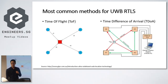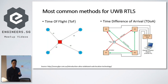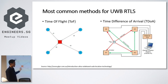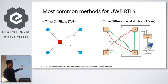For Ultra Wideband, there are two most common methods used for RTLS. One is the Time of Flight method, in which anchors — which are stationary ranging units — are placed at different spots. Then the tag, which is what you're tracking, ranges each of the anchors one by one.